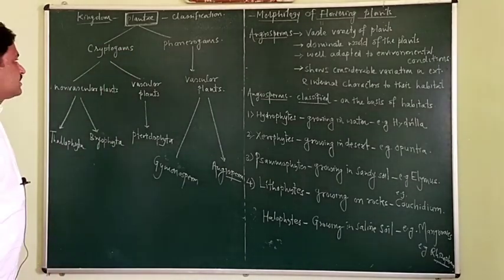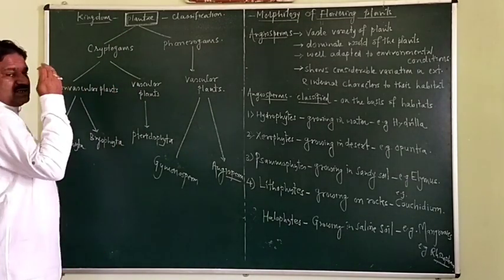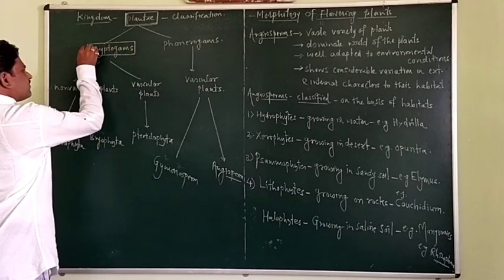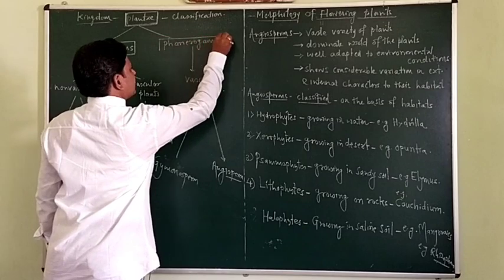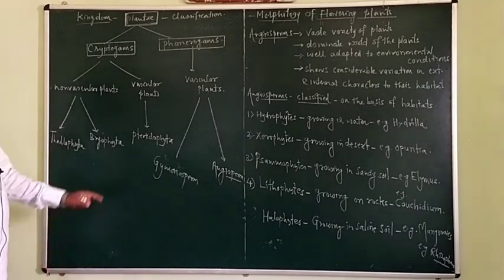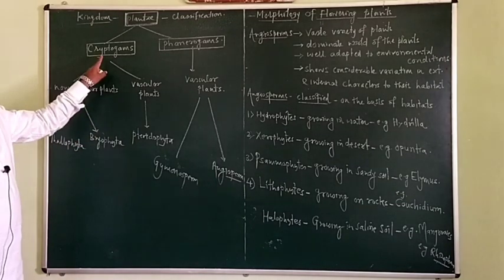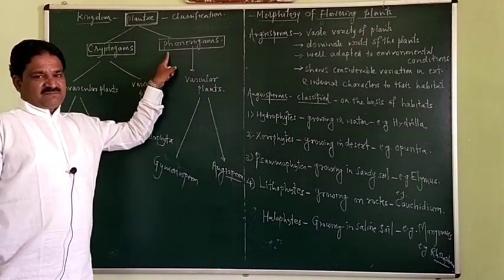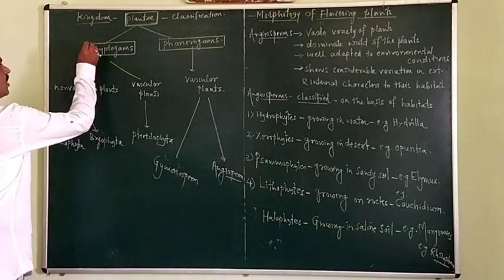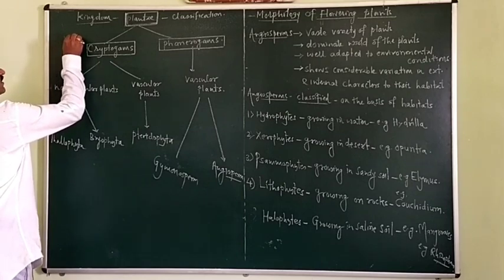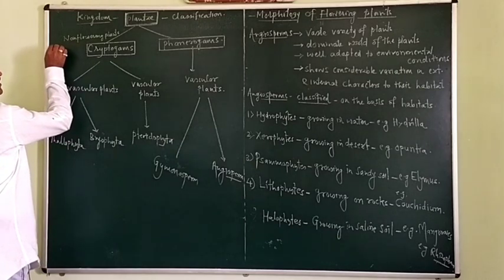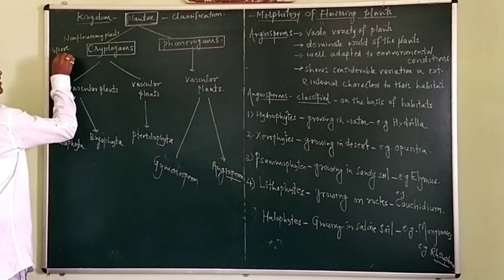The classification of plants: Kingdom Plantae involves two groups. Some plants are in Cryptogams, and some plants are in Phanerogams. The plants in Cryptogams are the non-flowering plants. They produce spores — these are the spore-producing plants. They do not produce seeds.